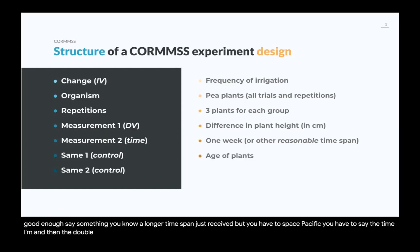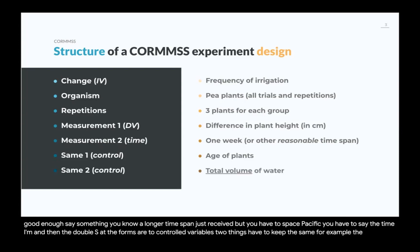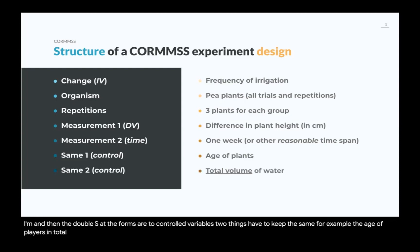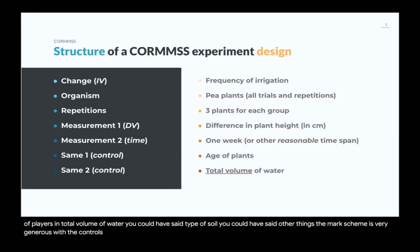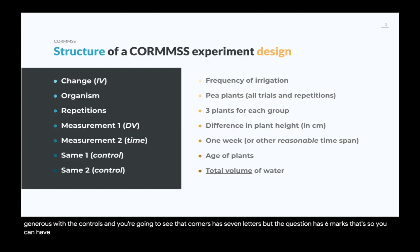The double S at the end of CORMS stands for two controlled variables — two things you have to keep the same. For example, the age of plants and total volume of water, though you could also say type of soil or other valid factors. The mark scheme is generous with controls. CORMS has seven letters but the question has six marks, so you have a little wiggle room.